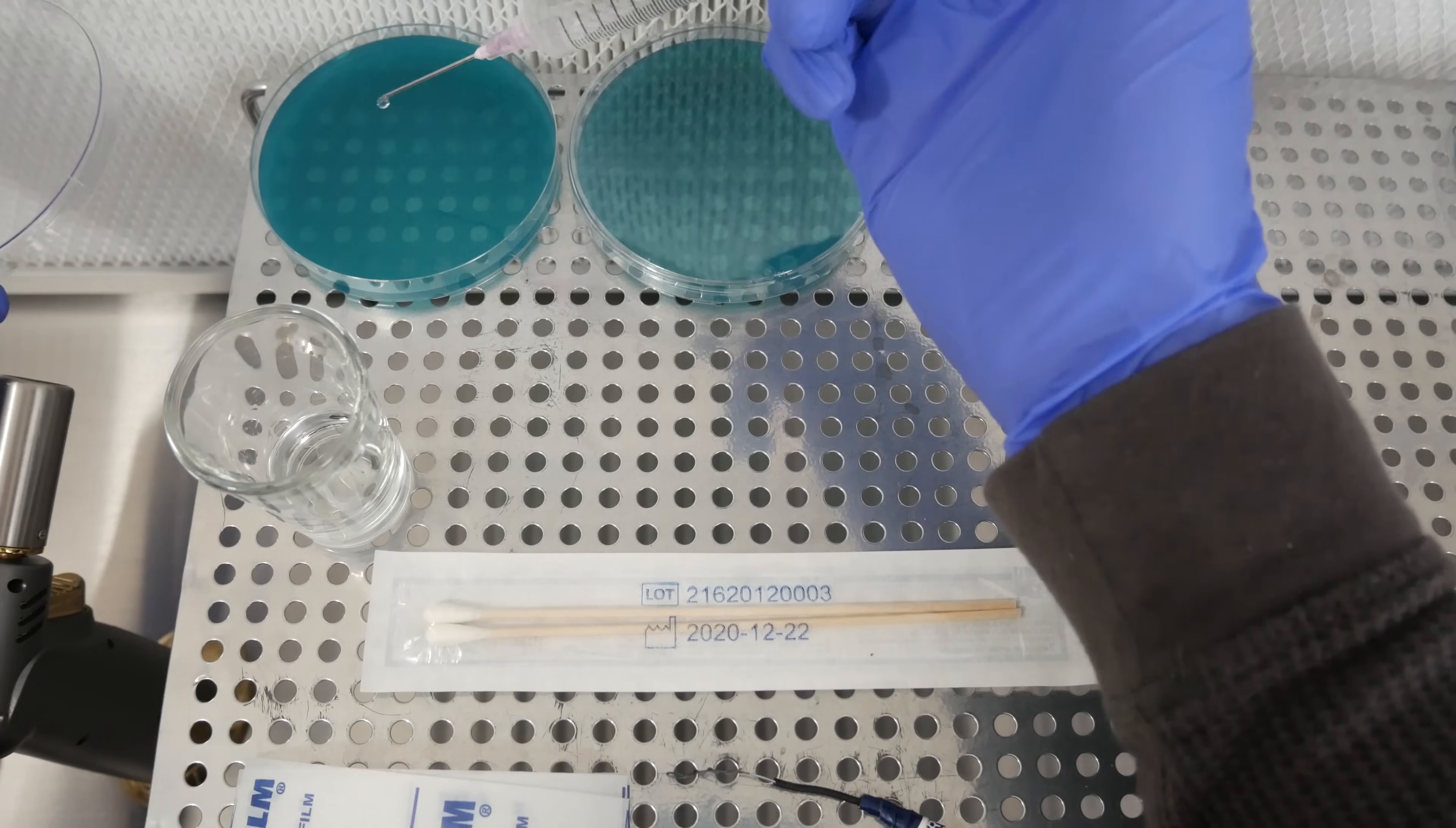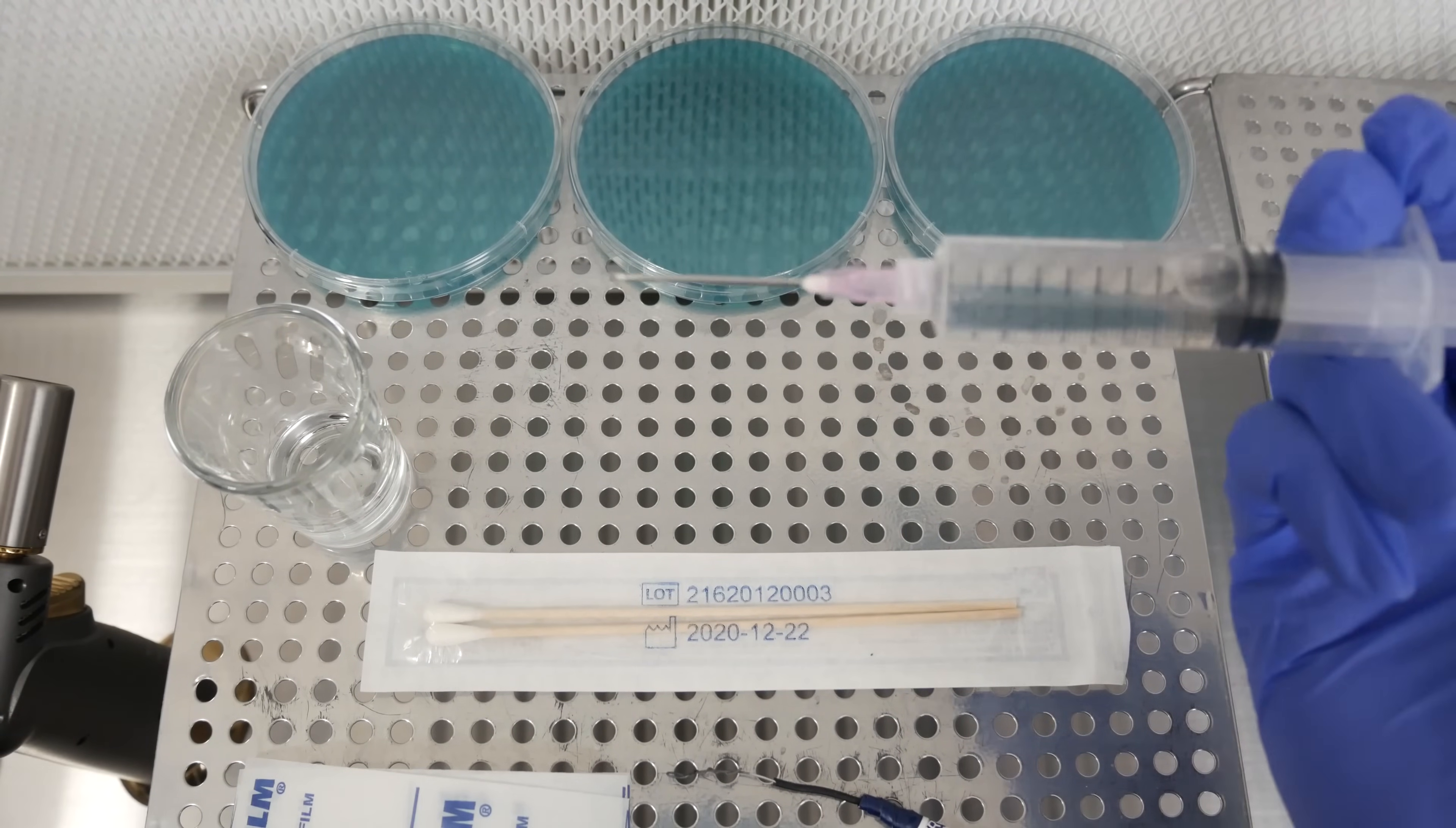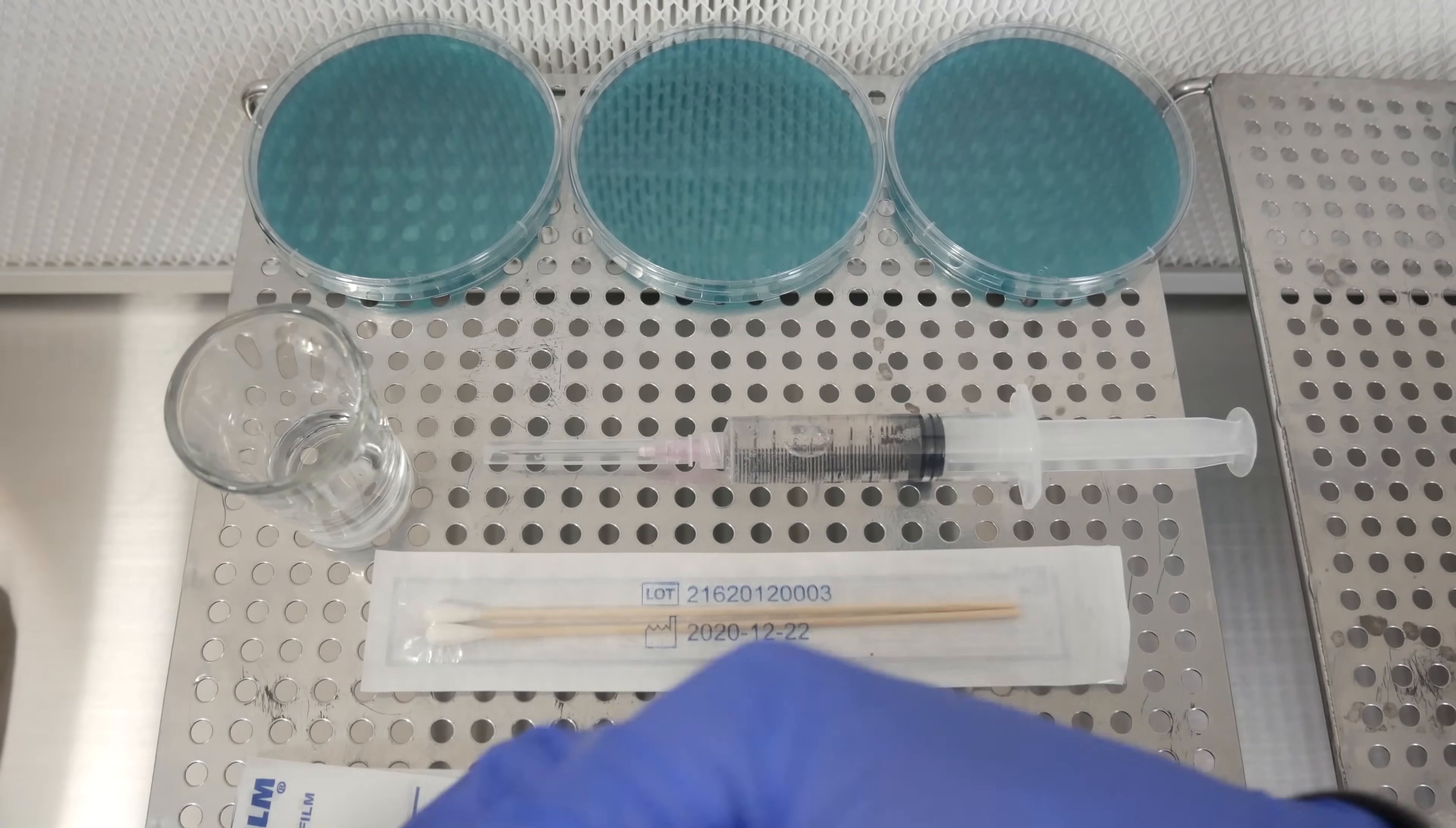For inoculating your agar dishes, you really only want one or two drops of your spore solution on the agar, that's enough, that's all you need. In my experience, I find that if you haven't used the spore syringe yet, the first plunge ends up squirting a lot more liquid than you really need. So squirting it out onto something else will give you easier control to squirt one or two drops onto your plate.